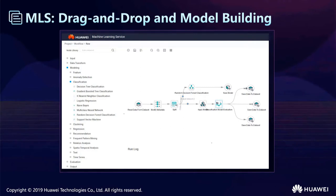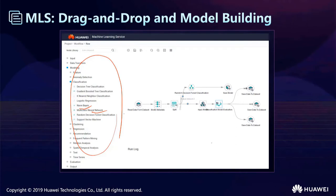This image shows the operating interface of the MLS. It shows how to drag and drop models. You can select from many tools to do data preprocessing, and select your algorithms such as Naive Bayes and neural networks. Many algorithms are supported in MLS, and we can draw and drag models. It is really simple and easy to use.